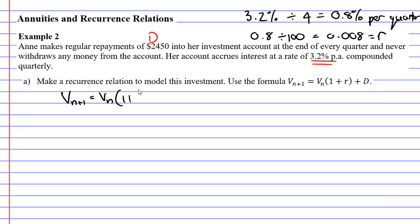So we'll write that down as 1 plus 0.008 in brackets, plus D, which is $2,450. To simplify this even further, we can focus on the brackets. What's 1 plus 0.008? Well, that will give us 1.008. And then we just copy the rest down. Now, this is the solution to question A. It asks for a recurrence relation to model this investment. And this is what we're looking for, basically the formula where R and D has been substituted in.